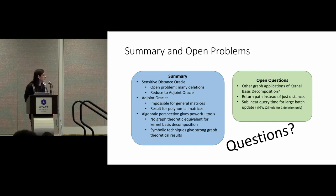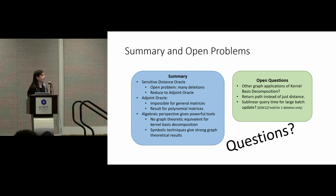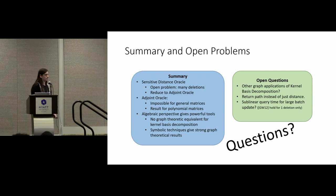Thank you. During Q&A, a question was raised about lower bounds for the adjoint oracle problem. For two deletions on weighted graphs, there is a lower bound assuming the APSP conjecture that you need n-squared query time or n-cubed preprocessing time.